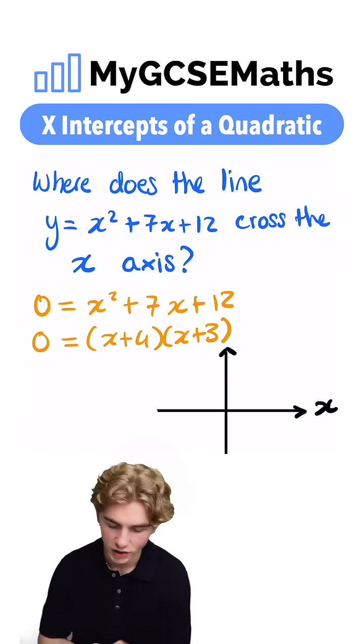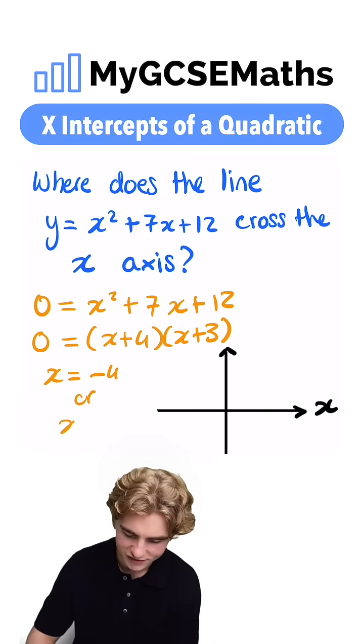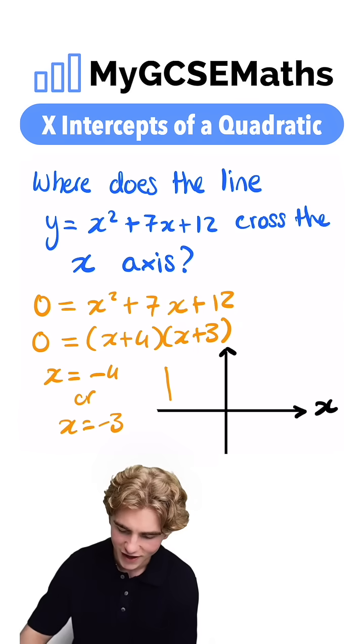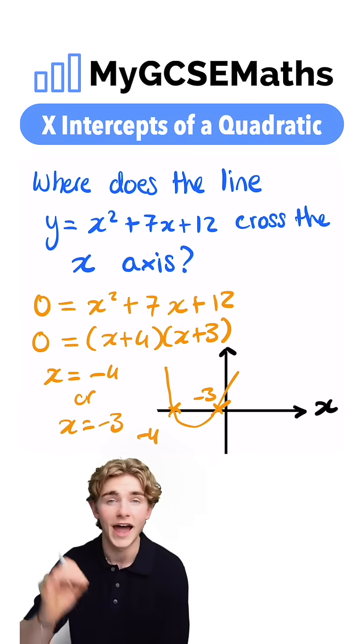Now to find the solutions to this equation, we just reverse the signs. We have x equals minus 4 or x equals minus 3. If we sketch this, it would look something like this. That is going to be our line.